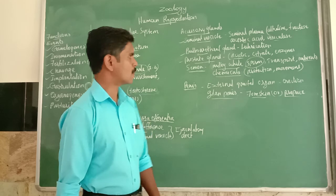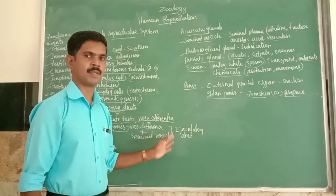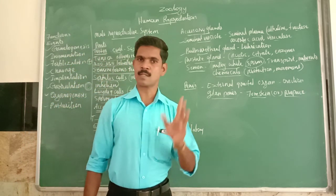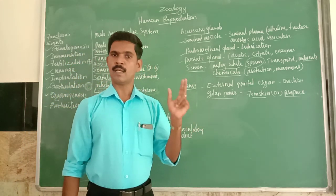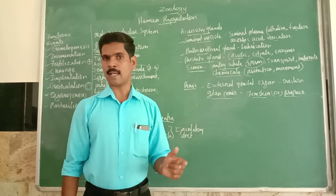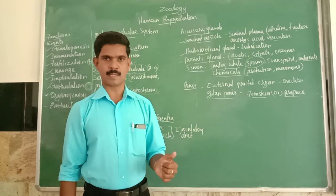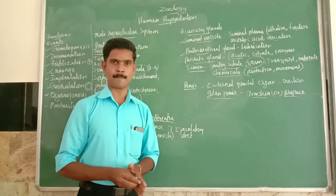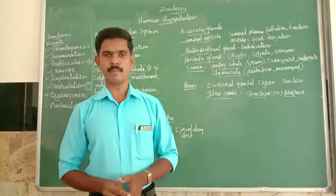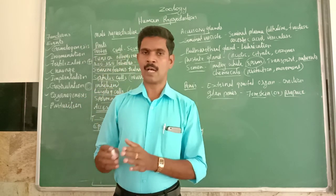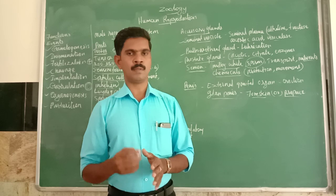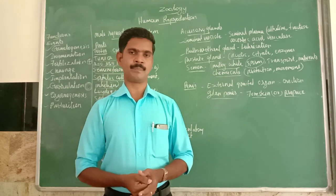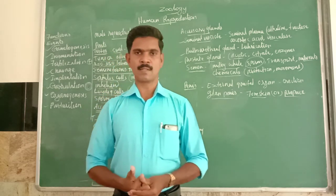We have now completed the structure and functions of the male reproductive system, which consists of a pair of testes, accessory ducts, accessory glands, and external reproductive organs. Study this using your book, take short notes, and we will meet in the next class. Thank you.